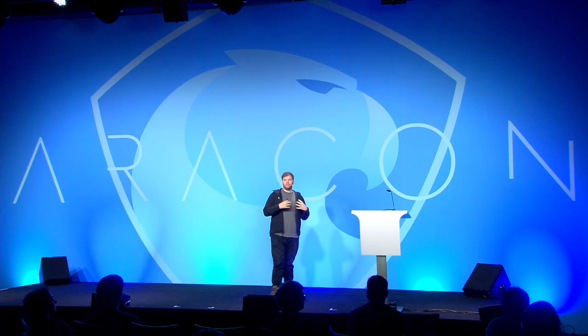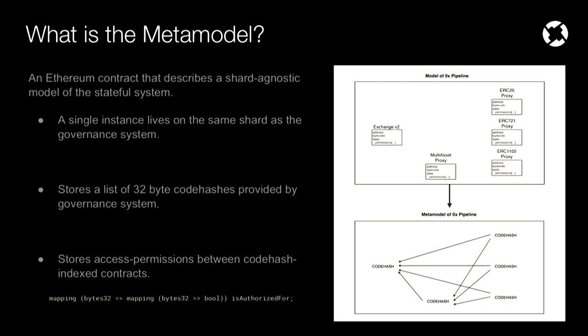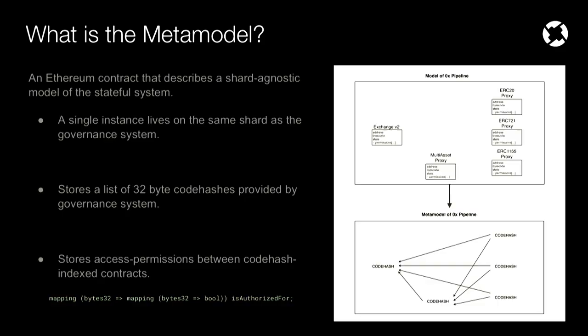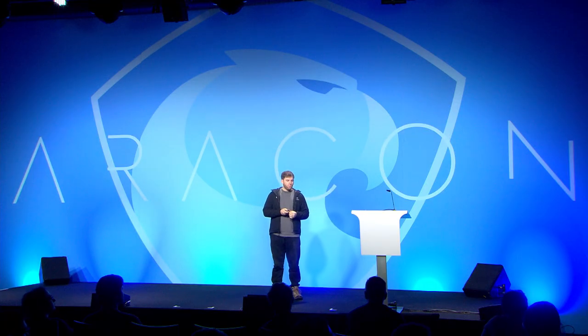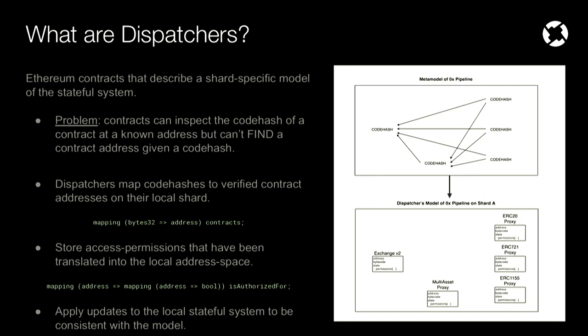The metamodel is just an Ethereum smart contract that does a couple of very simple things. It accepts instructions from our governance system. It stores a list of code-hash-indexed contracts — so components within our stateful system are identified as code hashes. And then it stores the access permissions between these different code hashes. That's all it does. On the right you can see the model we created of the 0x pipeline — we look at each smart contract individually — and we're going to move from this model to a metamodel where we just have these code hashes linked to each other. This metamodel will be valid for every single shard or blockchain.